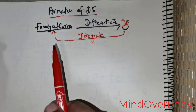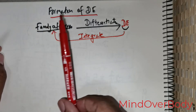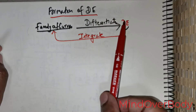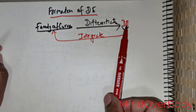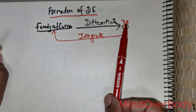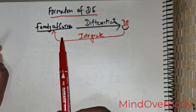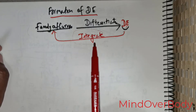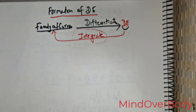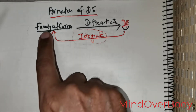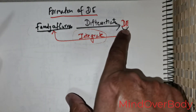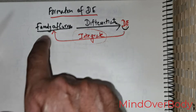To reiterate: if you are given a family of curves and you are asked to obtain a differential equation, the action required is to differentiate. On the contrary, if you are given a differential equation and you are asked to obtain a family of curves, the action expected from you is integration. Let us move on to achieving from the family of curves the required differential equations associated with the family of curves.